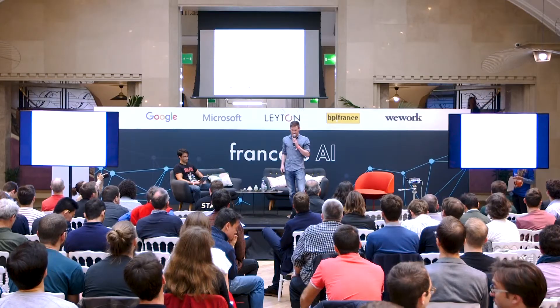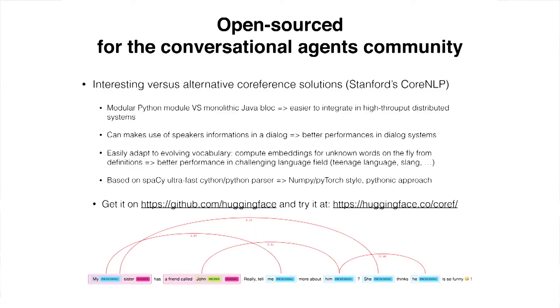So we've open-sourced it. It's state-of-the-art co-reference resolution. There's another one called Stanford CoreNLP, which is also nice, but it's Java-based — a big monolithic Java block that you don't really want in a high-throughput distributed production system. And we are the only one that makes use of speaker information in the dialogue. You can go download it, try it, and see that it works.